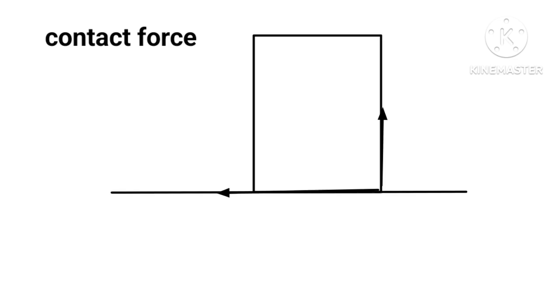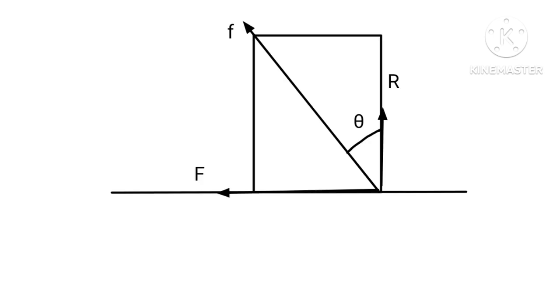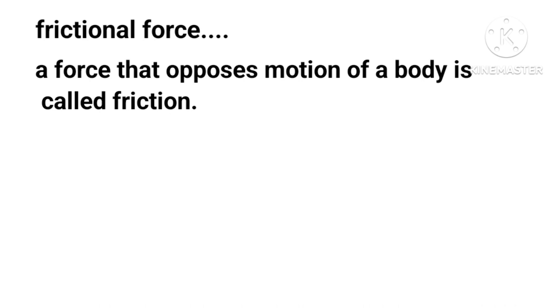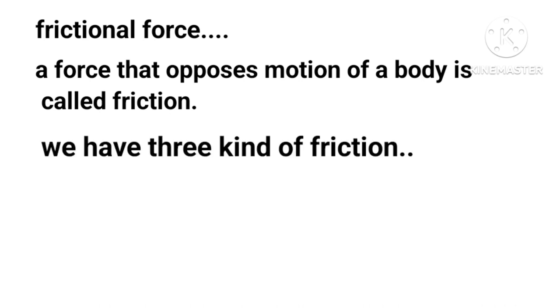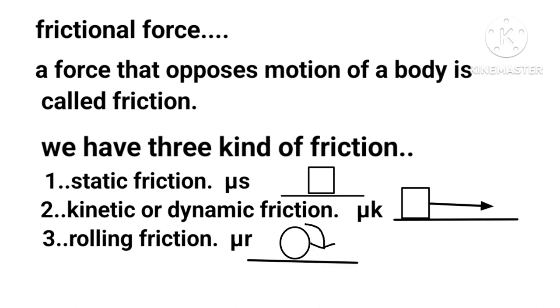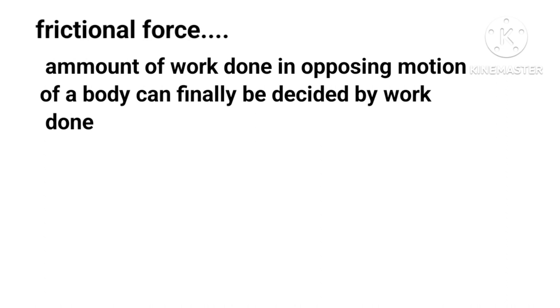A contact force is the resultant of normal force R and frictional force F. Its magnitude is √(R² + F²), and direction is given by tan θ = F/R. A force that opposes the motion of a body is called friction. We have three kinds of friction: static friction μs, kinetic or dynamic friction μk, and rolling friction μr.